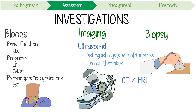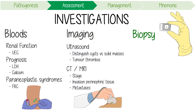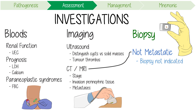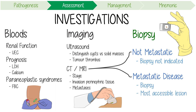CT or MRI can be used to stage the disease by assessing invasion of the perinephric tissue and by demonstrating regional lymph node involvement or metastasis. For biopsies, if imaging demonstrates a malignant renal mass with no metastatic disease evident, biopsy is not routinely indicated. On the other hand, if metastatic disease is found, biopsy of the most accessible metastatic lesion is performed to make the diagnosis.